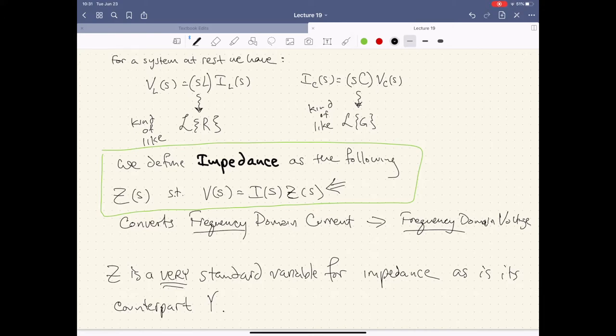And so we define impedance as follows. It's this thing that's attached to the current, or when I multiply it to the current in the frequency domain, it equals the voltage in the frequency domain. So that's really interesting. And if we think about it, it gives us a whole new realm of possibilities for circuit analysis.